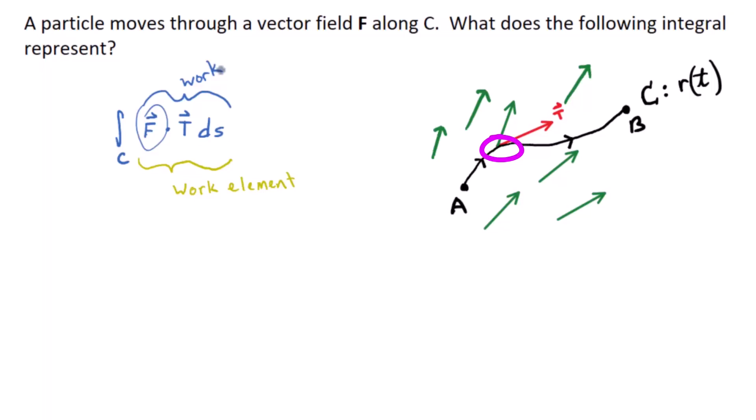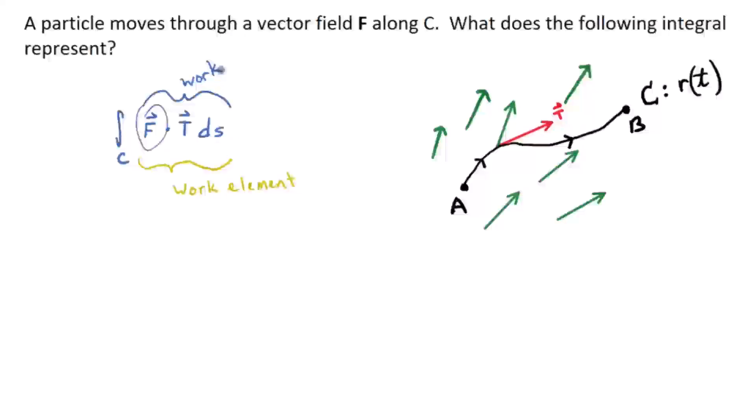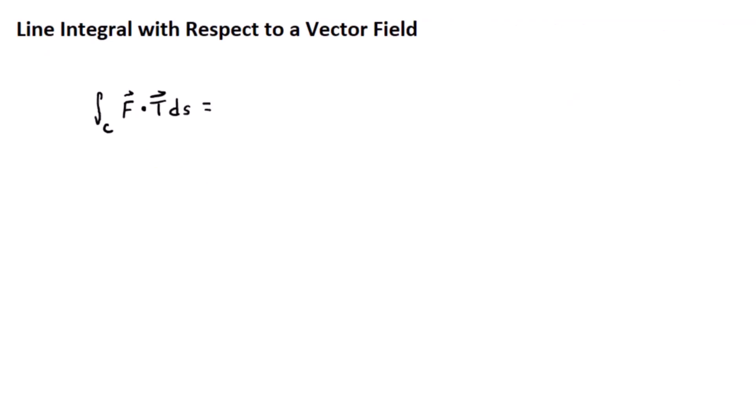You could imagine breaking up the curve into intervals like I did earlier, but I'm not going to waste time with that. So what does the sum of all such values do? All such F dot TDS's. It gives you the total work done by the force, the vector field, in moving the particle from point A to point B. So that's how we're developing the idea of the line integral with respect to a vector field. But as you'll see later on, it doesn't have to represent work if F is not a force field.